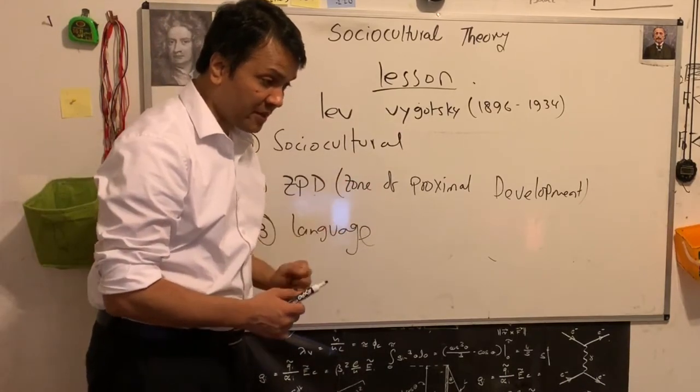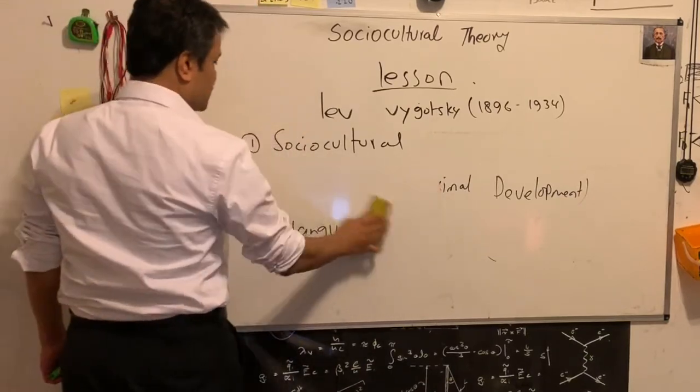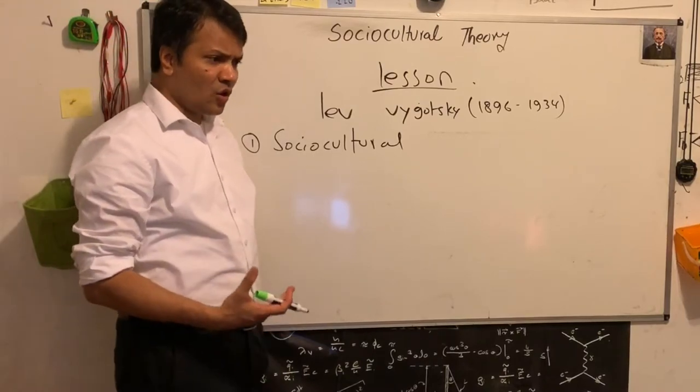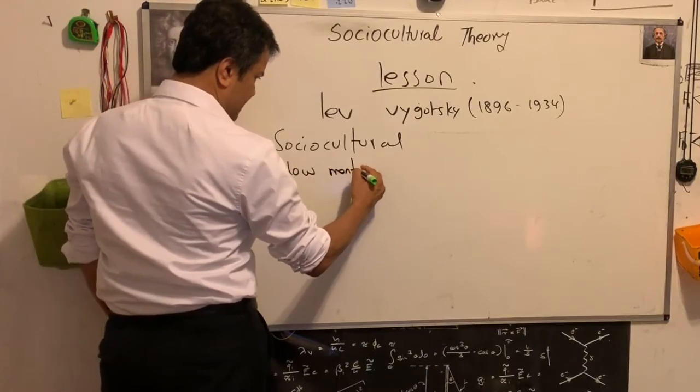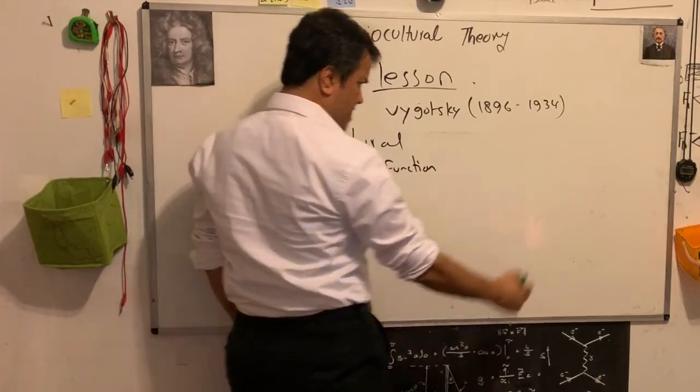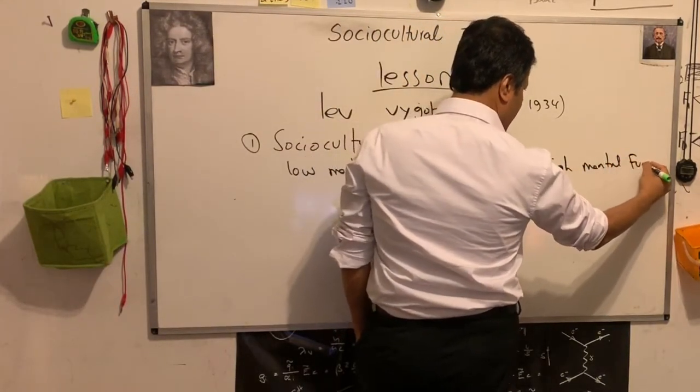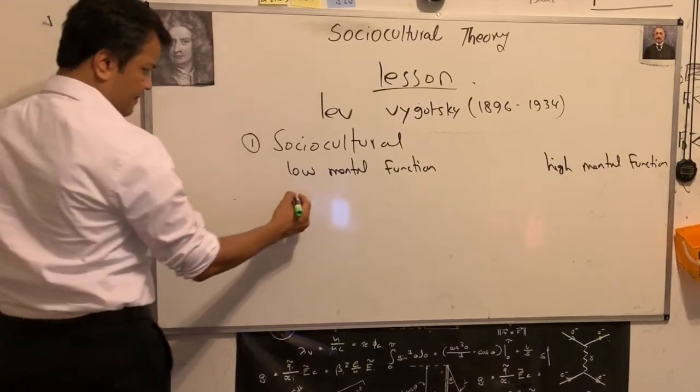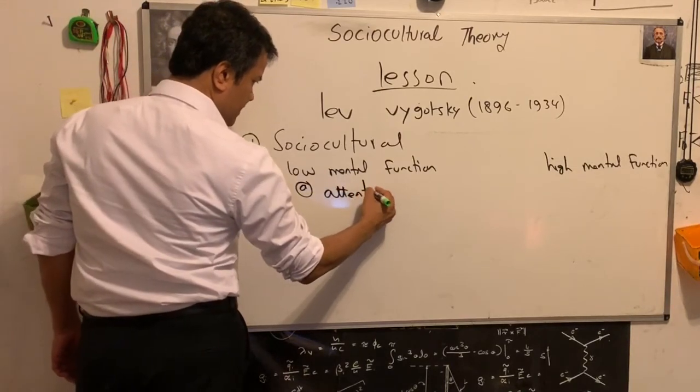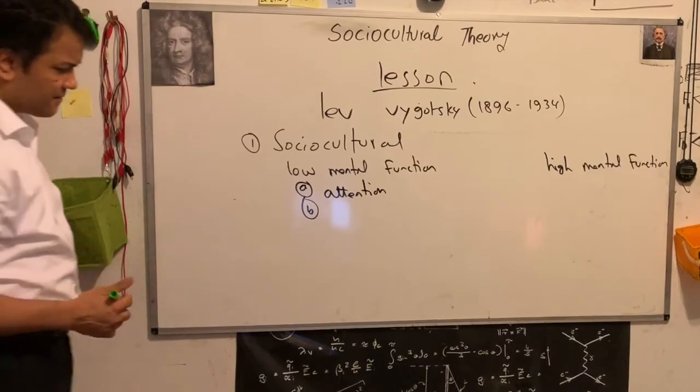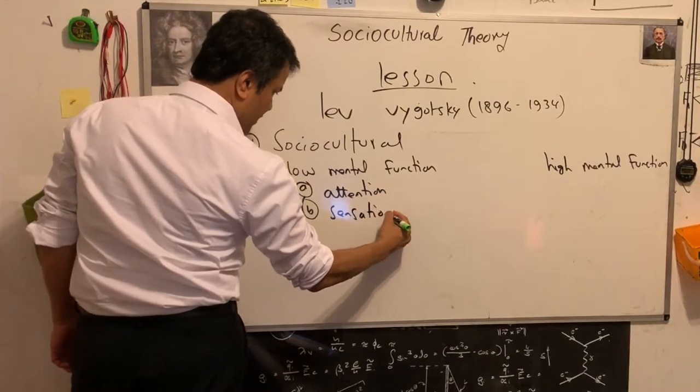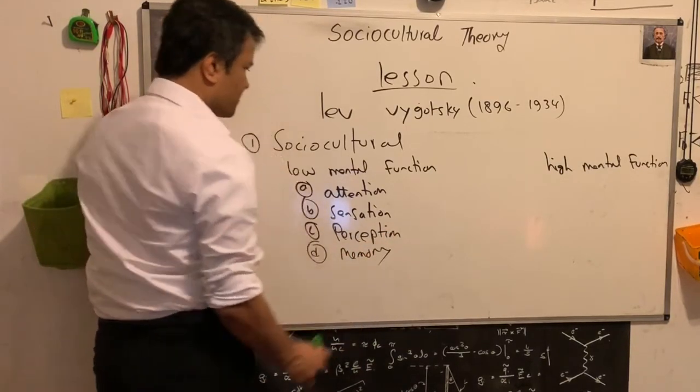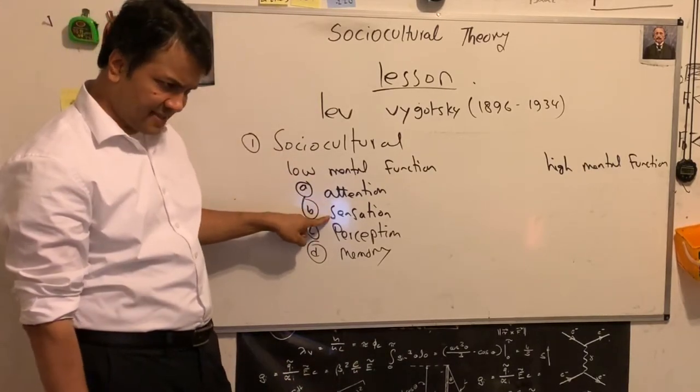Let's dive in. Sociocultural: according to Vygotsky, children have a low mental function and a high mental function. The low mental function has four components. Number one is attention, low attention span. Number two is sensation. Number three is perception. And number four is memory.